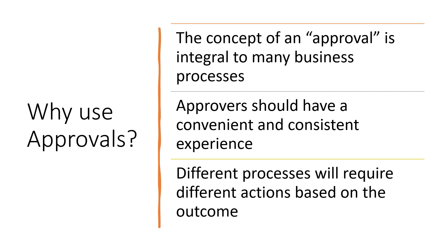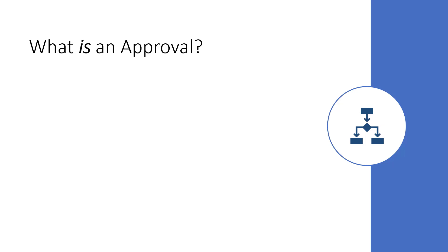In terms of what an approval actually is in Power Automate — I tell folks it's a transactional object. There's a transaction occurring: you're asking somebody to make a choice. When you assign an approval to someone you're saying, 'This request has come in — do you approve it or reject it?' Even in scenarios where it's not approve or reject but providing feedback like yes or no, you're asking them to commit to some kind of decision based on that data. It's an object that presents people with choices and they make a decision.